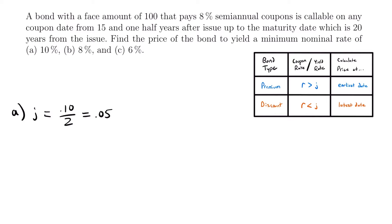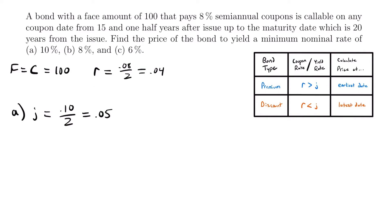Let's write down everything else we know. The face amount or face value is 100. Since the redemption value is not mentioned elsewhere in the problem, we can assume it equals the face amount, so F equals C equals 100. The bond pays 8% semi-annual coupons, so the coupon rate R equals 0.08 divided by 2, which is 0.04. That 8% is a nominal rate we need to convert to an effective rate. The coupon rate of 0.04 won't change throughout this problem.